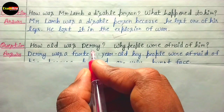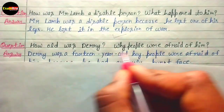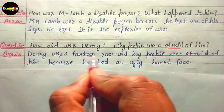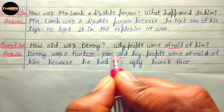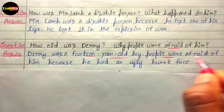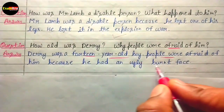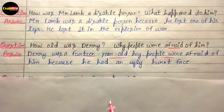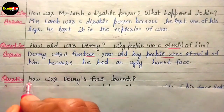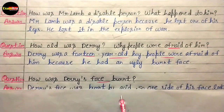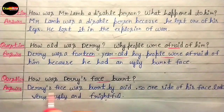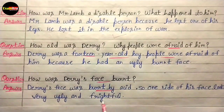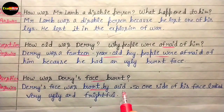How old was Derry and why were people afraid of him? Derry was a 14-year-old boy. People were afraid of him because he had an ugly burnt face — one side of his face looked very ugly and frightful. Derry's face was burnt by acid, which is how one side of his face became so disfigured.